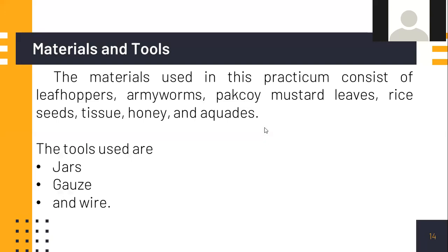The materials used in this practicum consist of leaf hoppers, armyworms, pak choi, mustard leaf, rice seeds, tissue, honey, and distilled water. The tools used are jars and wire.